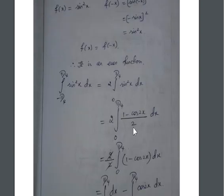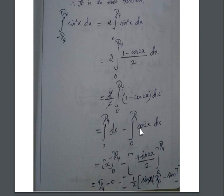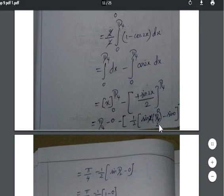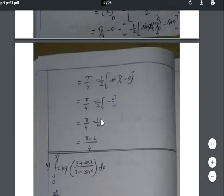Using the formula sin²x = (1 − cos2x)/2, the expression becomes 2 × ∫₀^(π/4) (1 − cos2x)/2 dx. The two 2's cancel, giving ∫(1 − cos2x)dx. Splitting: ∫1 dx − ∫cos2x dx gives x − sin2x/2, evaluated from 0 to π/4. Result: π/4 − (1/2)·sin(π/2) = π/4 − (1/2)·1 = π/4 − 1/2, which equals (π − 2)/4.